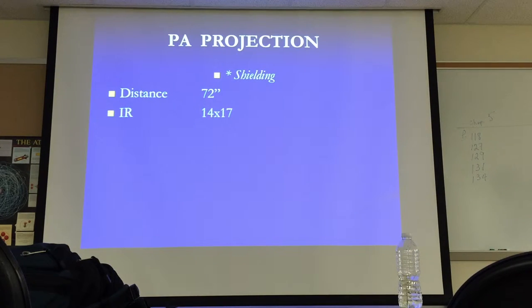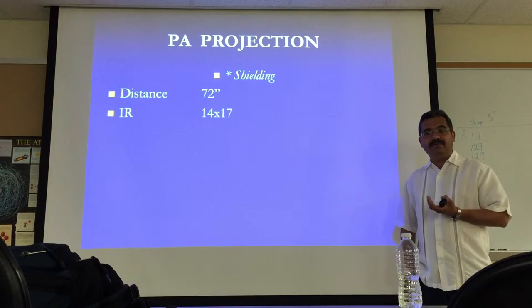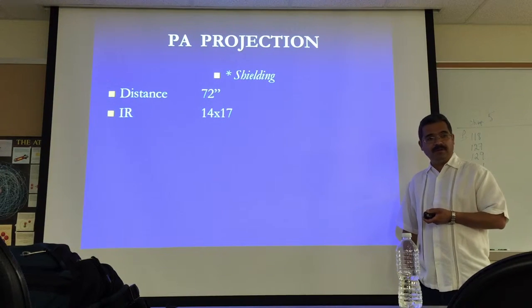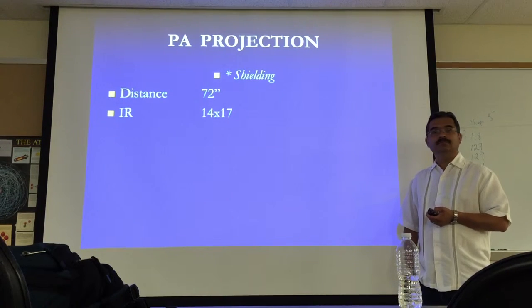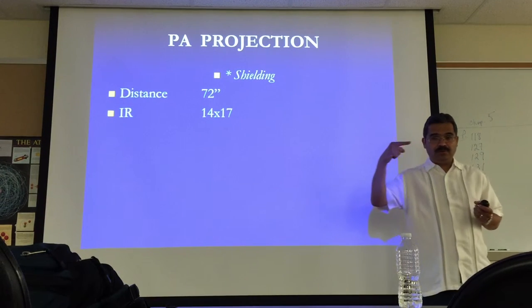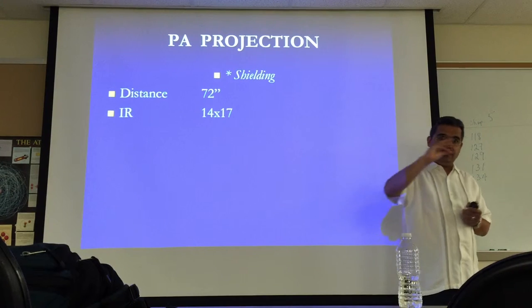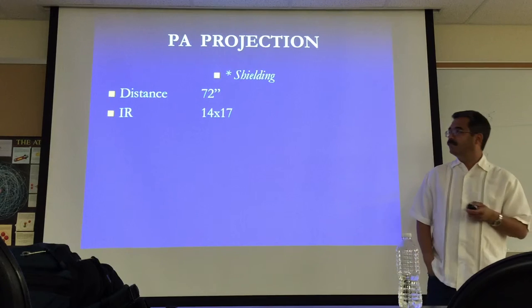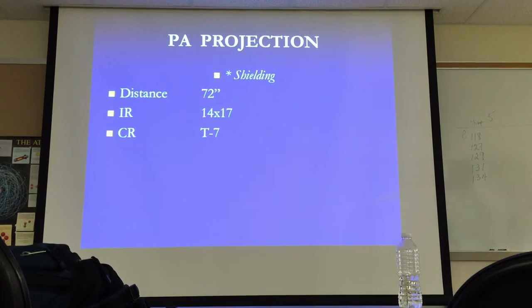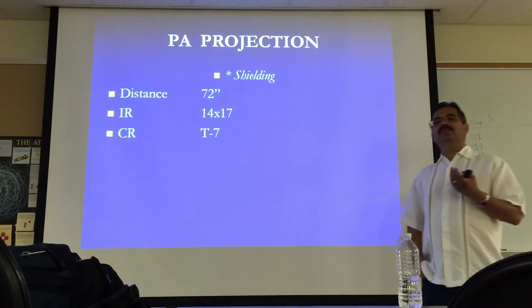Distance is 72 inches — I told you that. Image receptor is always a 14 by 17, which is the largest size we have. The central ray — CR — is placed at T7 and the mid-sagittal plane.